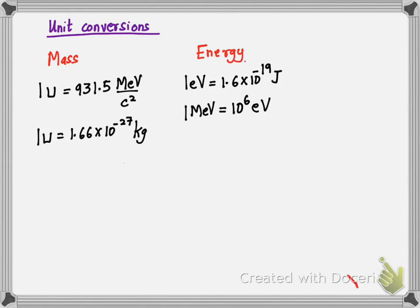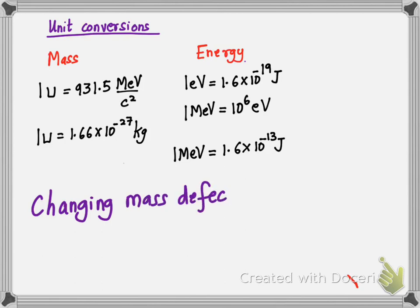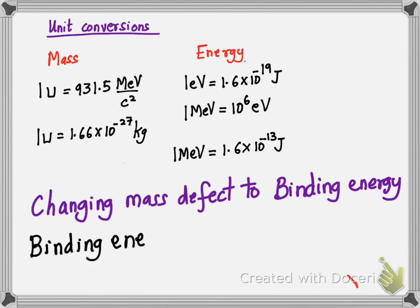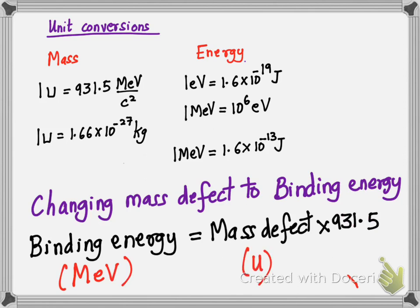One mega electron volt equals 10 to the power of 6 electron volts, since 'mega' is the prefix for 10 to the power of 6. So 1 MeV equals 1.6 times 10 to the negative 13 joules. An easier way to convert mass defect to binding energy is: binding energy equals mass defect multiplied by 931.5, where binding energy comes out in MeV and mass defect must be in unified mass units.